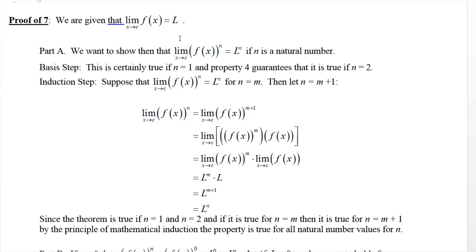And certainly if this is just one, that's just the hypothesis. But we also know from property four that we've already proved this when n is two as well, because when n is two this is just f(x) times f(x). And then we apply that rule, then it's just L times L or L squared is the result. So we've proved this for n equals one and two already.